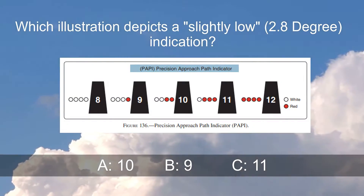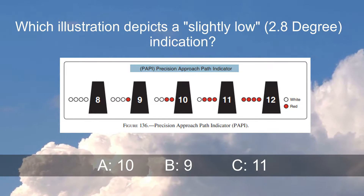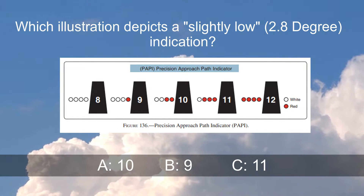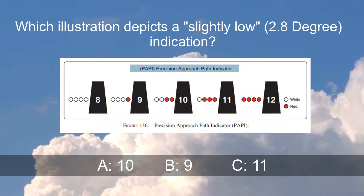Which illustration depicts a slightly low 2.8 degree indication? A: 10, B: 9, C: 11.